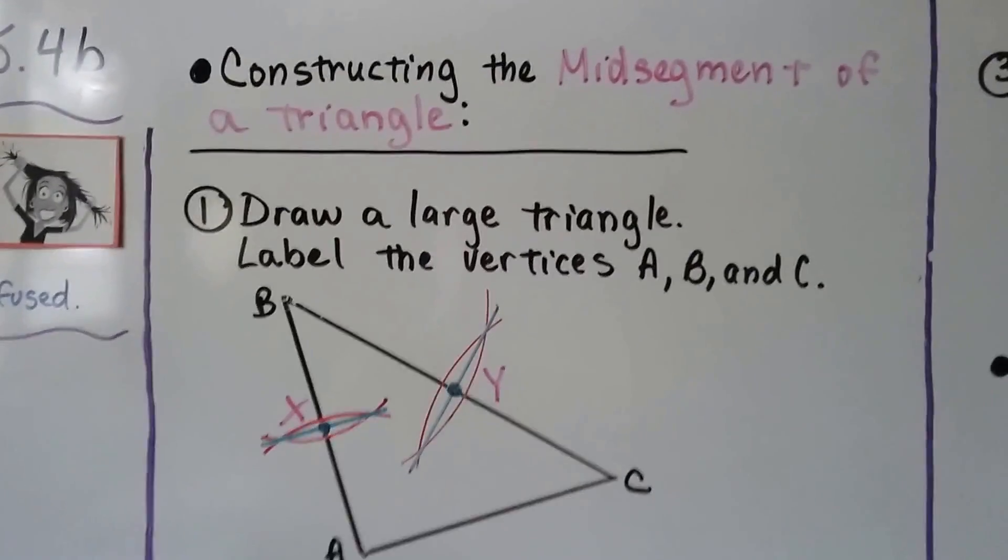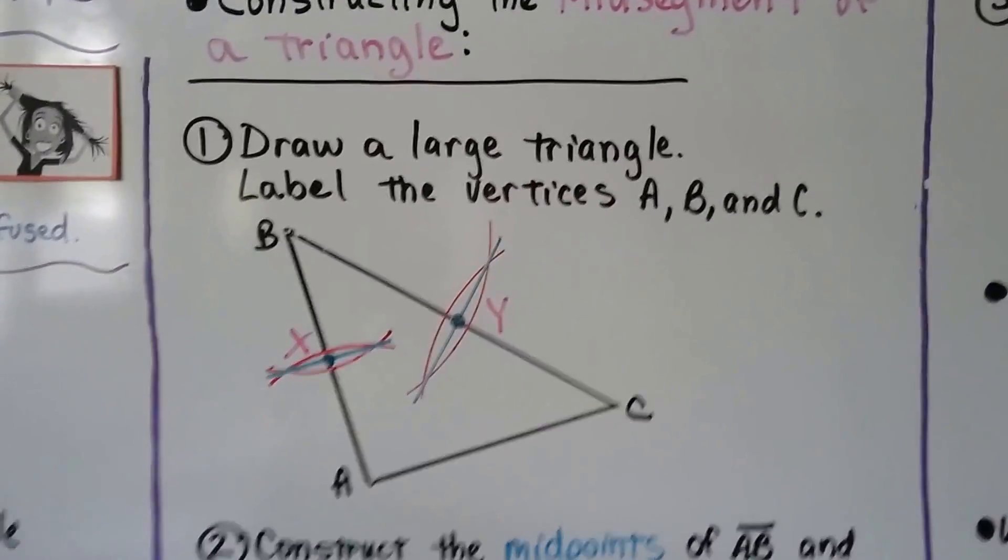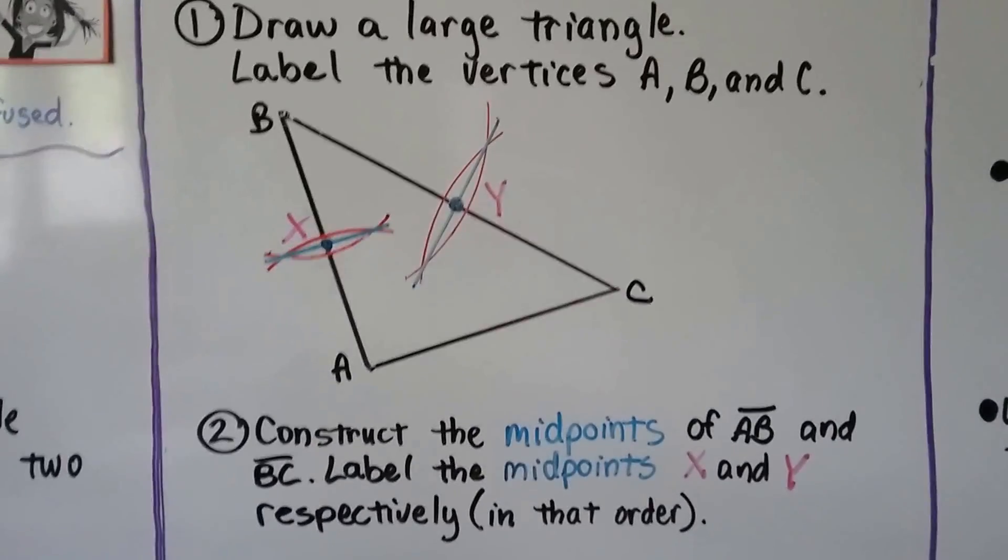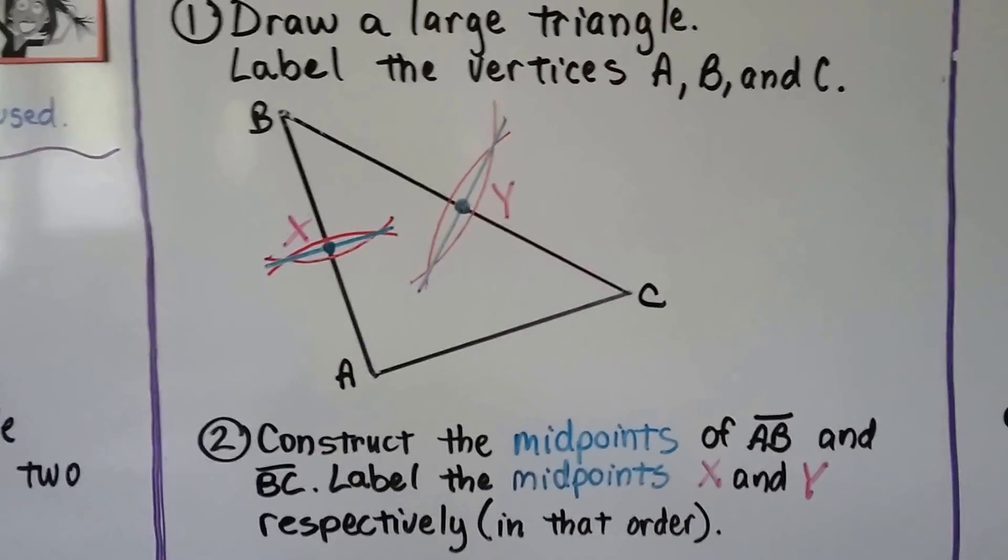Constructing the mid-segment of a triangle, the first thing we do is draw a large triangle and label the vertices A, B, and C. Then we construct the midpoints of segment AB and segment BC.